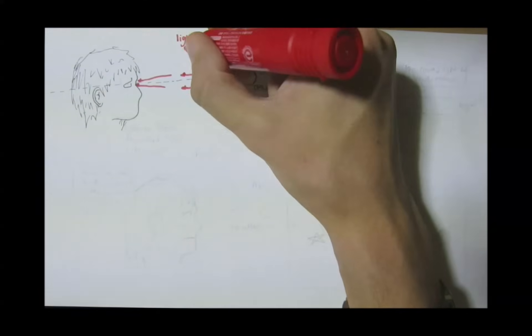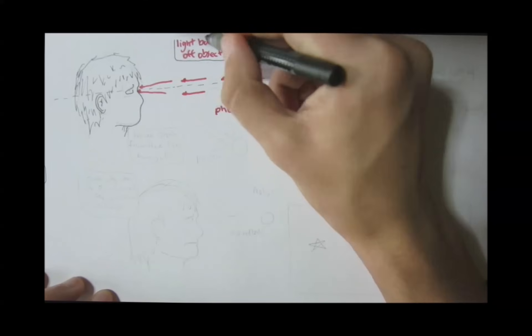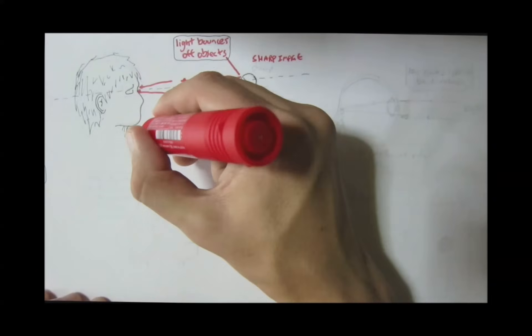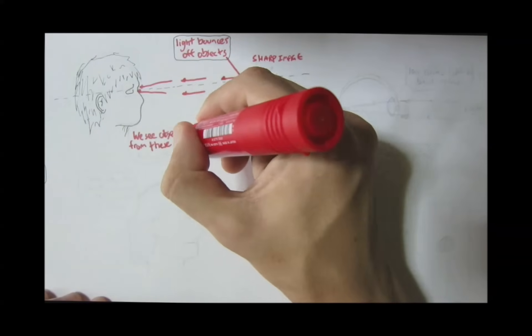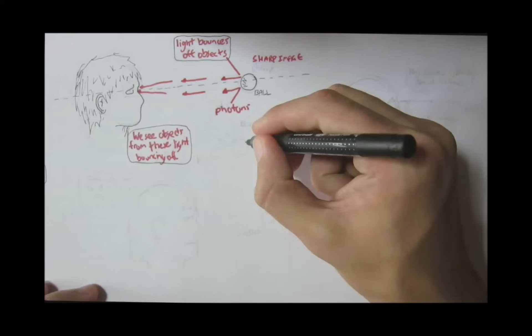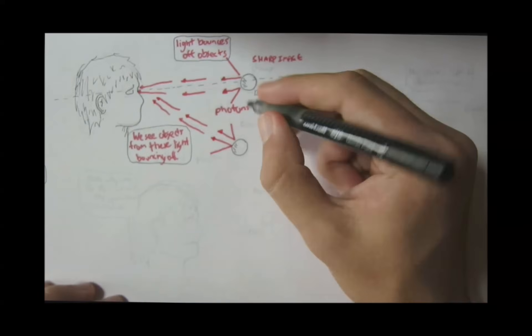So, this will create a sharp image because he is looking straight at it. However, this ball down here also bounces some light off it into his eyes. But the young boy can't see this ball and only sees it as a blurry object because his eyes are focused elsewhere in a different direction.